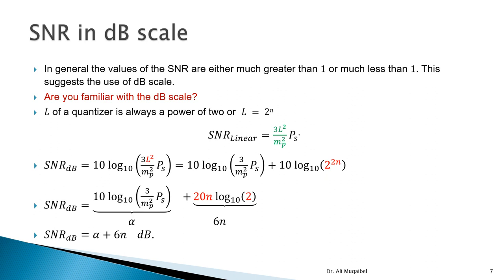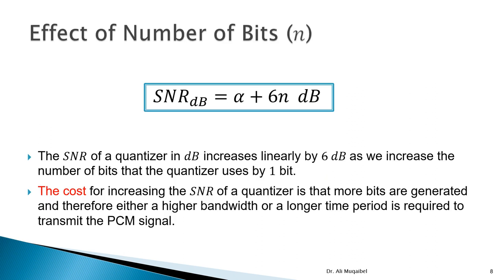The cost of increasing the SNR is generating more bits per sample. Using more bits requires a higher data rate or greater bandwidth. If the same bandwidth or rate is kept, a longer transmission time results. So the PCM signal will require more bits, and the cost will increase either in bandwidth, rate, or delay.